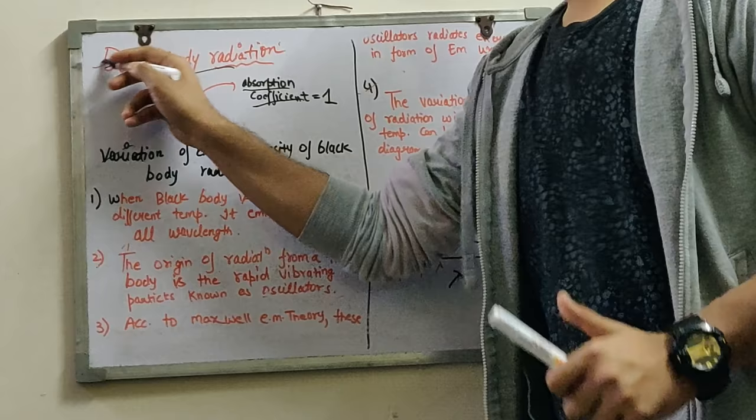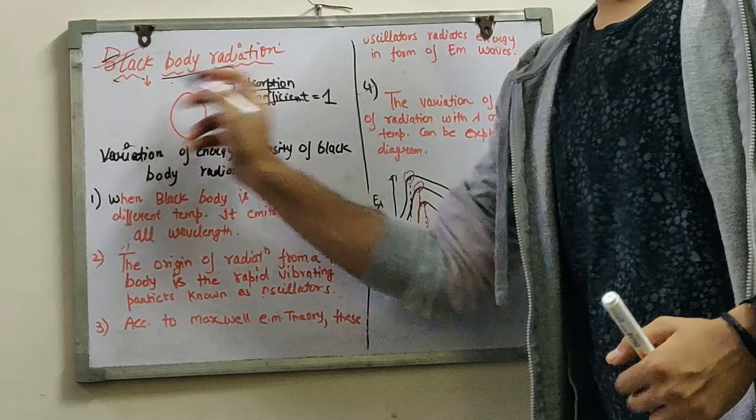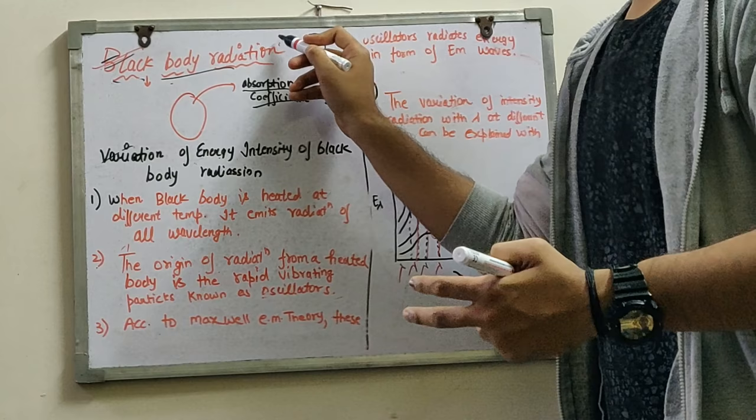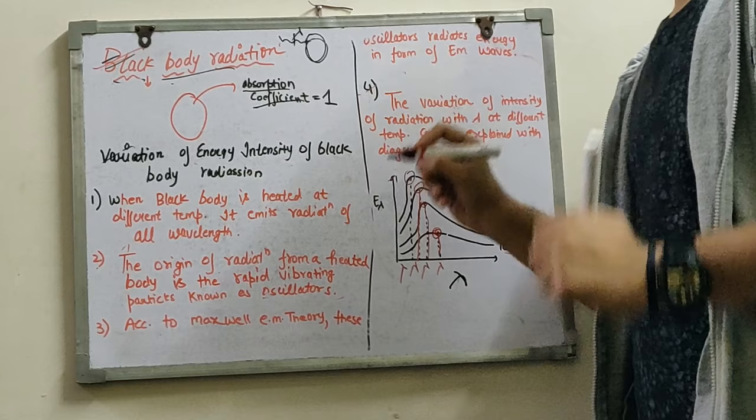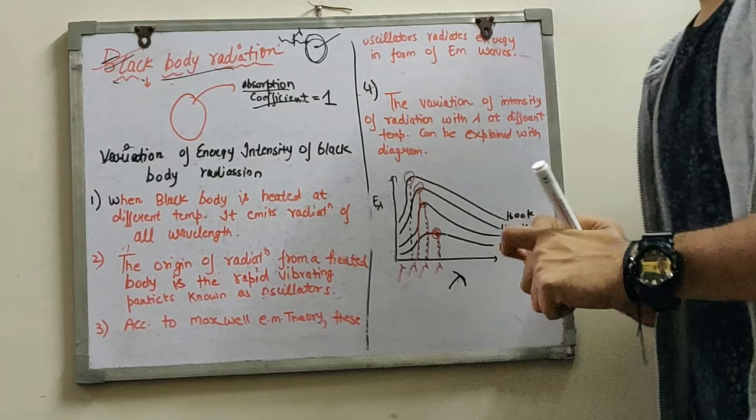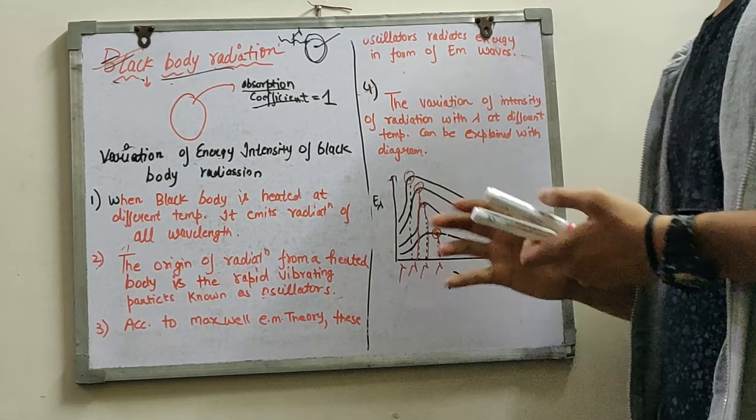Now in black body radiation, what is a black body? A black body is such a body that if there is any wavelength of any energy or any wavelength of radiation, and this body has absorbed it, then this body will be termed as a black body. A black body is that body that will absorb any wavelength of radiation.